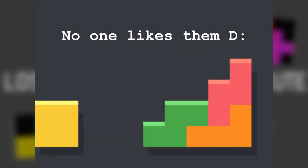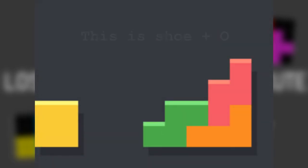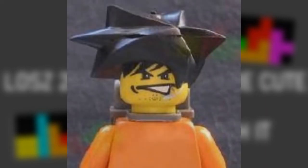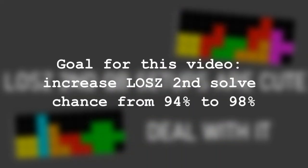If you don't know already, LOSZ second is considered one of the worst seconds. The general setup for LOSZ is SHU plus O, which has an average solve chance of 94%. Pake recently suggested that I should make an intermediate LOSZ Cubase guide, so in this video I will try to increase the solve chance to close to 98% with the help of 6 additional setups.